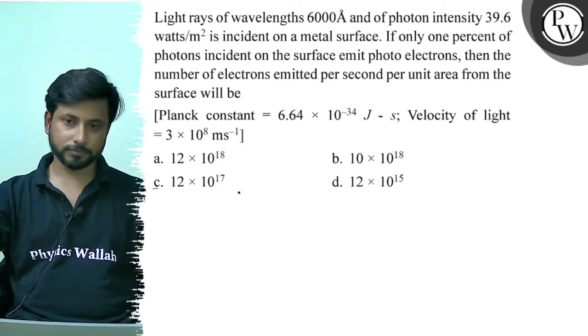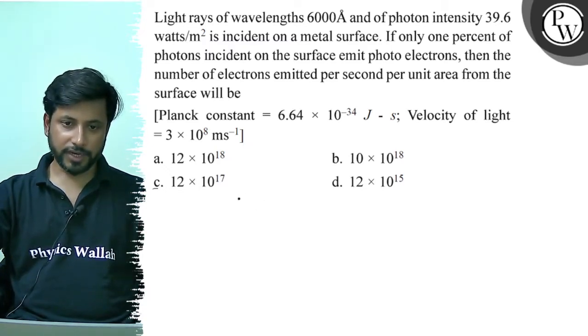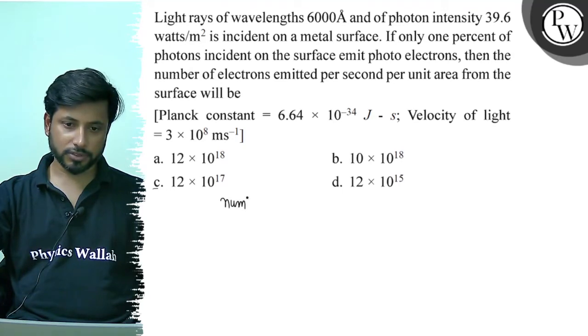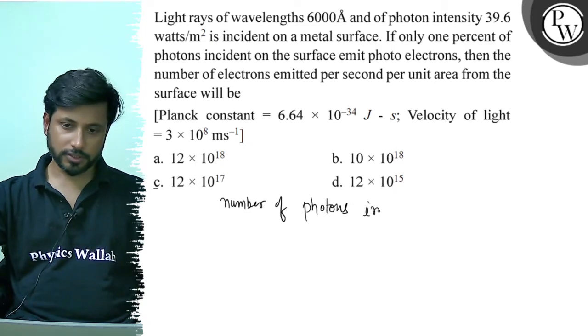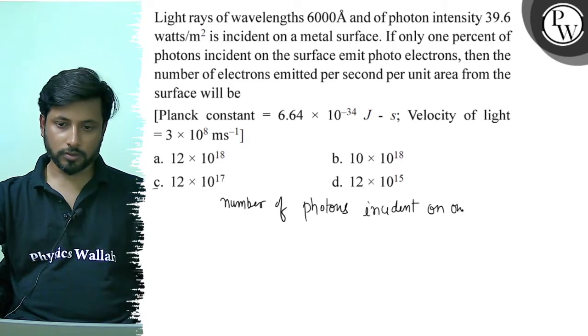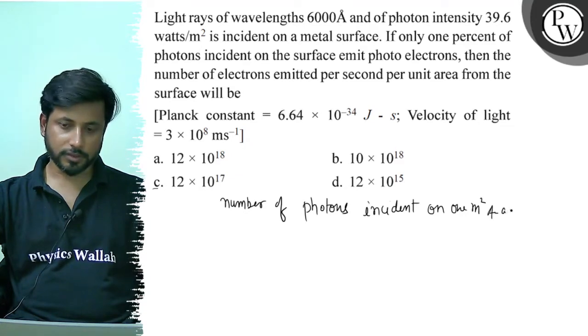Okay, now let's see. Wavelength is 6000 angstroms, photon intensity 39.6. So let's start. The number of photons incident on one meter square area per second.